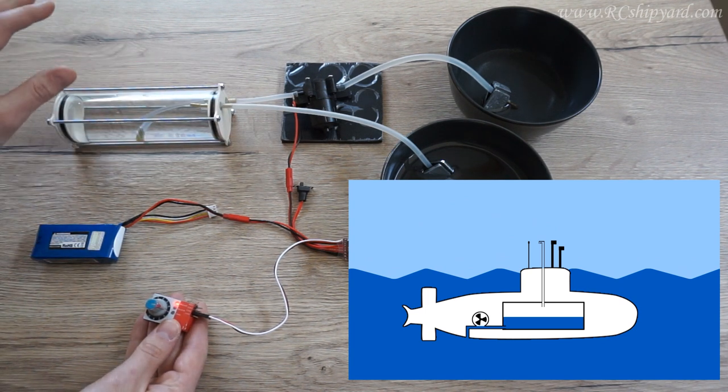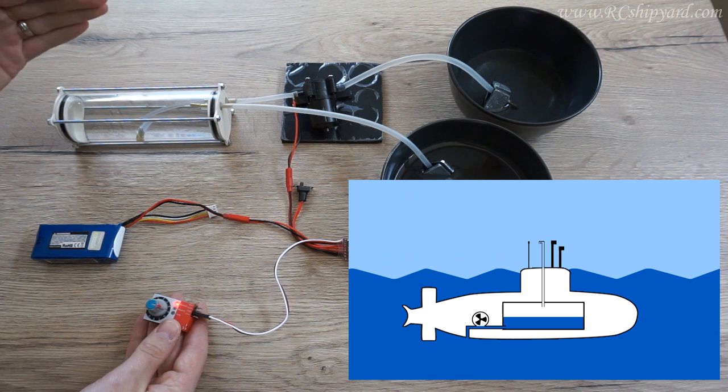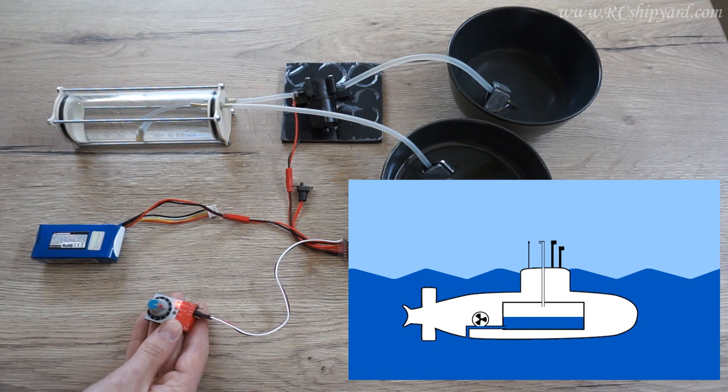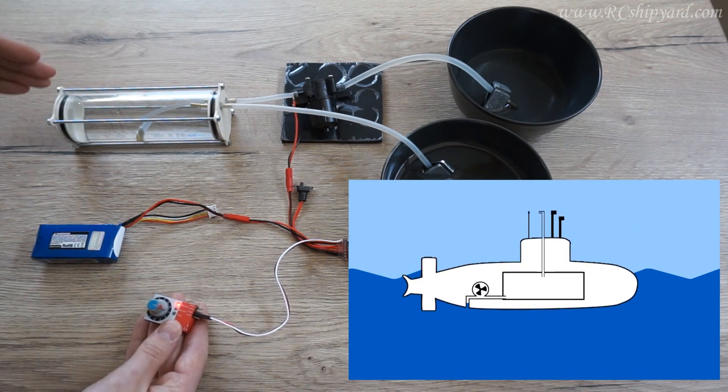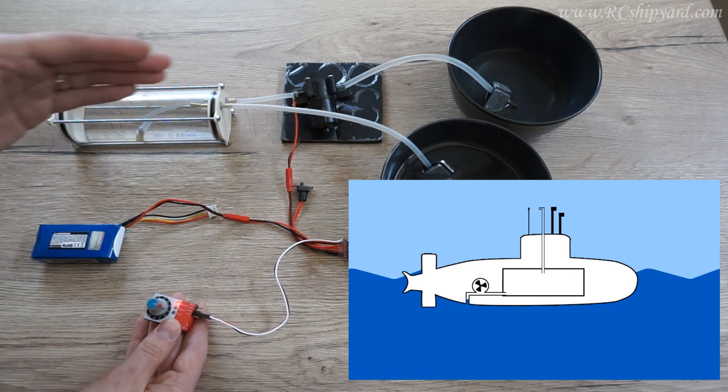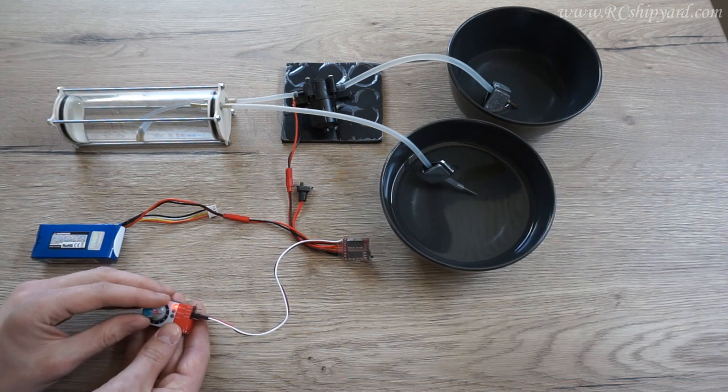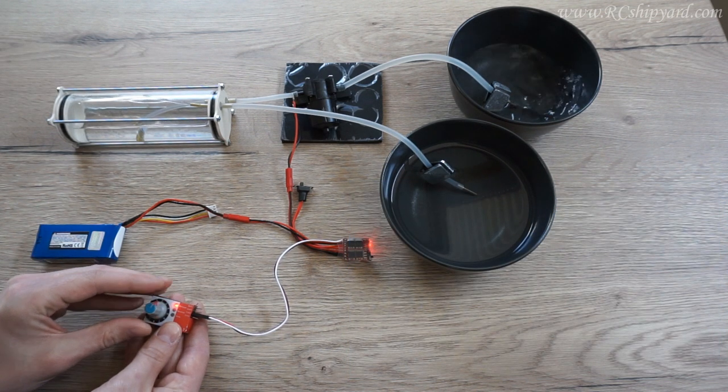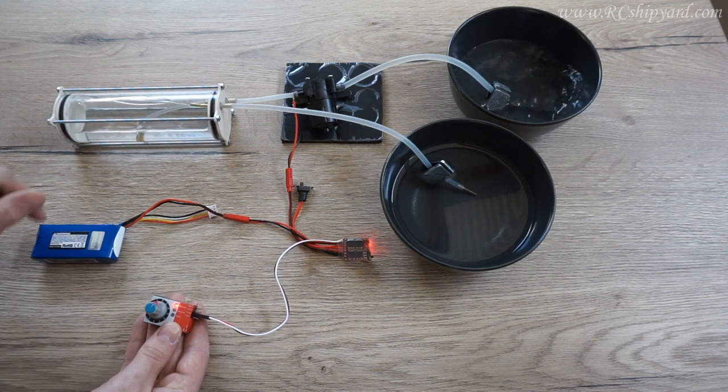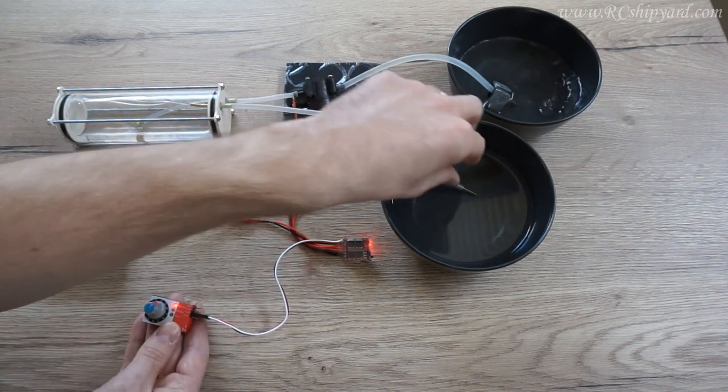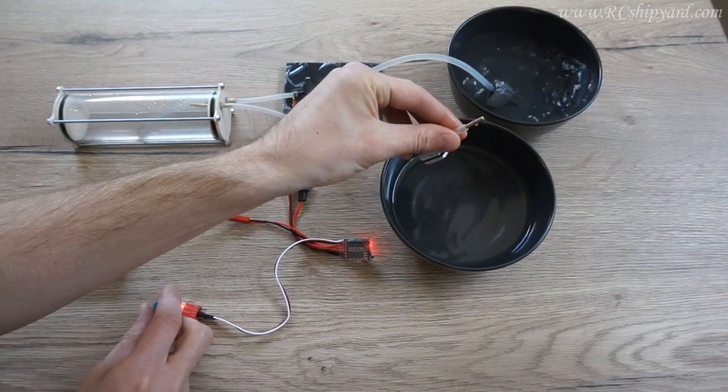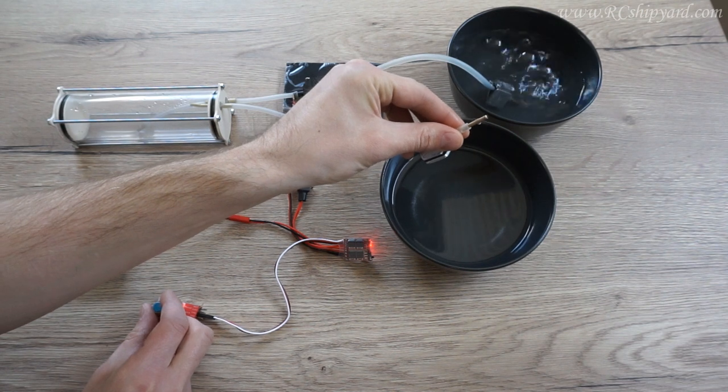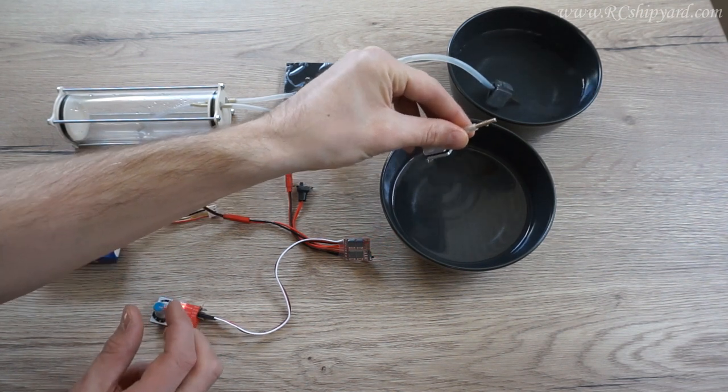This will allow our model to surface enough that the snorkel would break the surface again. The model would not have a correct water line yet, but as soon as the snorkel will bridge the surface, the air will get sucked again and the pressure will be equalized and we will be able to empty the tank completely. So I will show you this now. You see? And now we are emptying it completely.